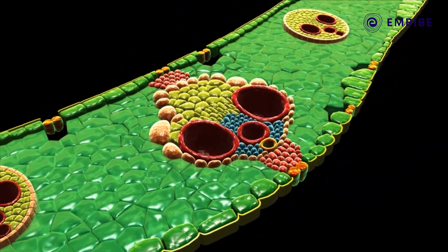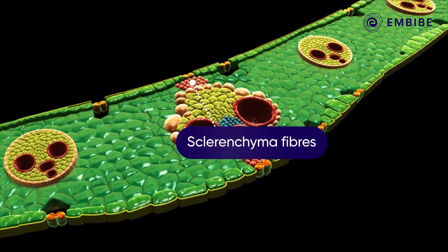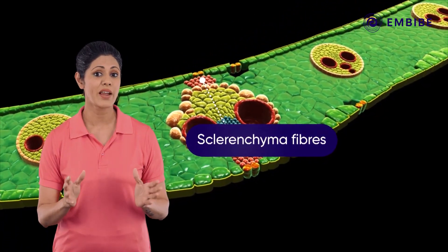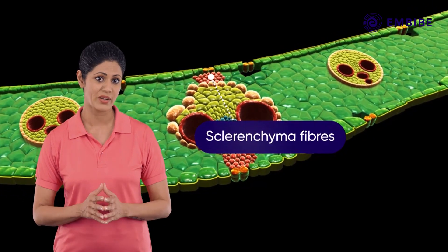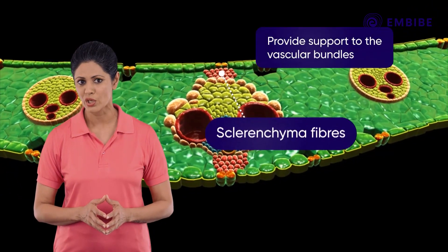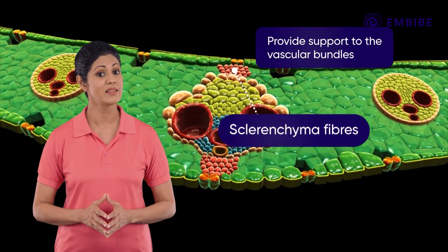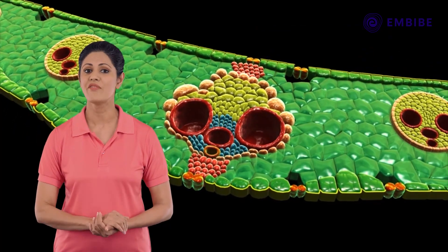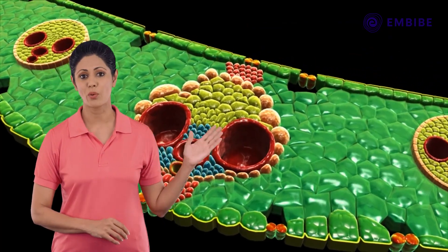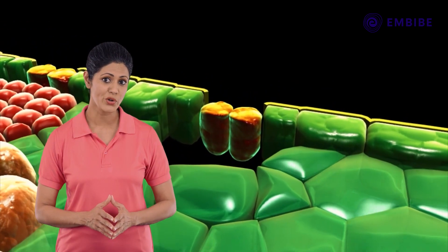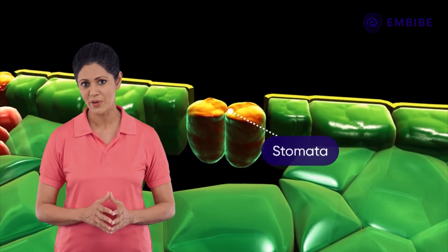Located exterior to the vascular bundles are several cells called sclerenchyma fibers. The sclerenchyma fibers function primarily in providing support to the vascular bundle and the leaf. These cells are very rigid. The stomata are the small pores located in the upper and lower epidermal layers of the leaf.